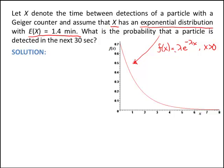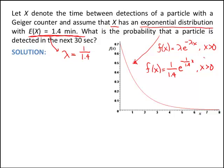So in this case, if we know the mean of the exponential random variable, its parameter lambda is 1 over the mean, 1.4. So this particular probability density function is written as f of x equals 1 over 1.4 times e to the negative 1 over 1.4 times x, for x greater than 0.